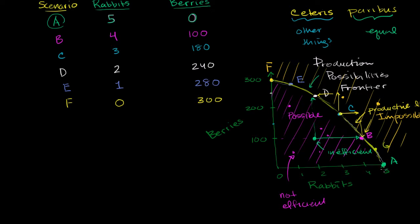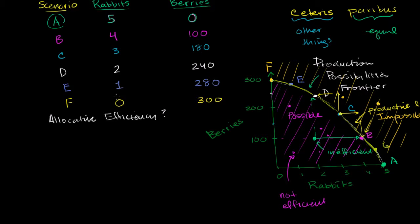All of these scenarios have achieved productive efficiency. But which of these do we pick? How do we decide to allocate our time? What I want to talk about in this video is allocative efficiency. It's somewhat subjective, based on the preferences of the hunter-gatherer. But it gives us a framework for thinking about which of these scenarios meets our preferences the best. I'll review a bit from the last video — the marginal cost of each incremental rabbit, or the opportunity cost of each incremental rabbit.